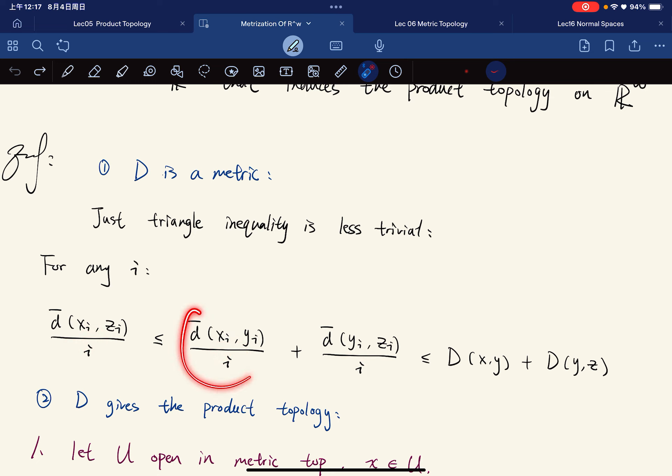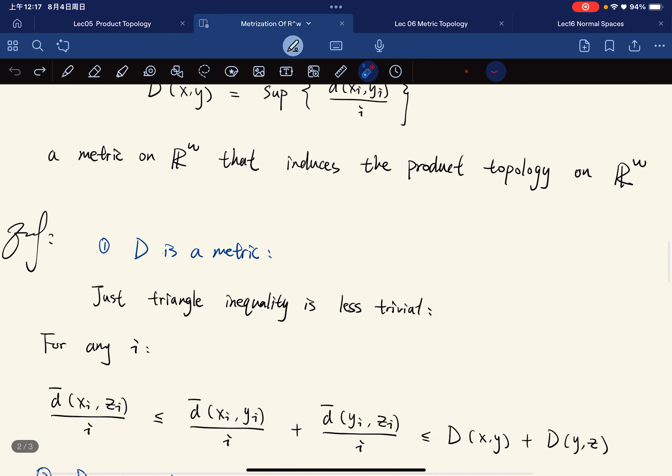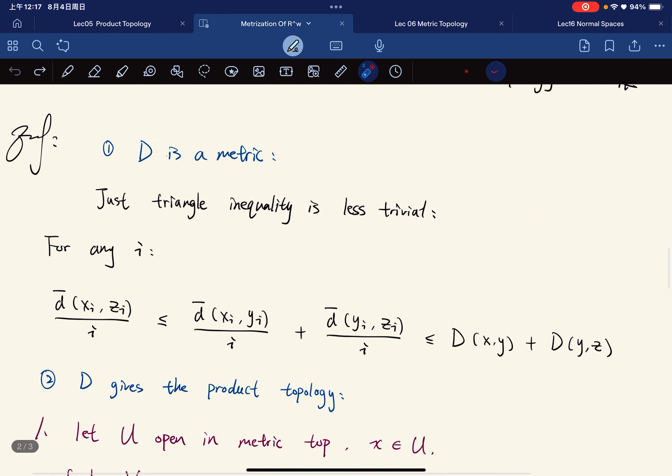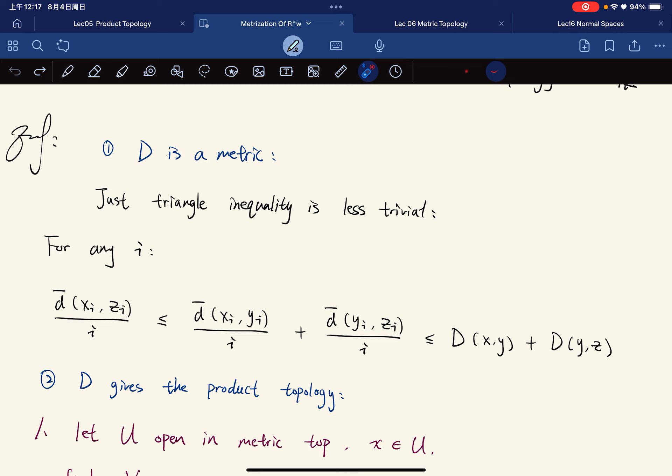And each of them is, by definition, bounded by them. So all this quantity is bounded by this, which implies that d(x,z) is bounded by this, right? Because it is defined as the supremum. This is already an upper bound, and d(x,z) is the least upper bound.